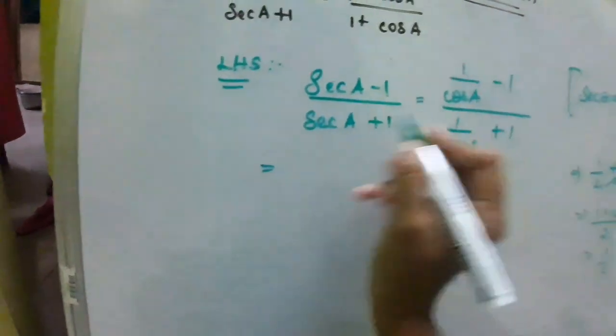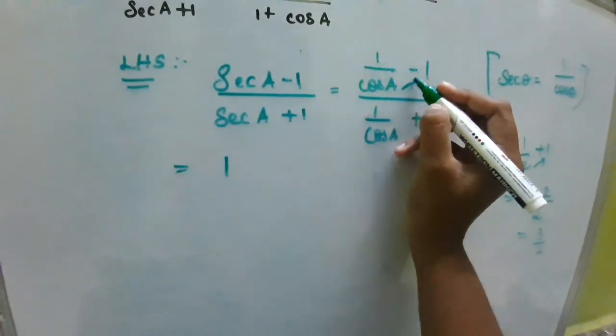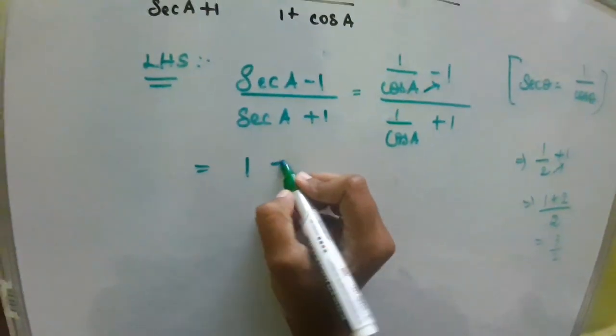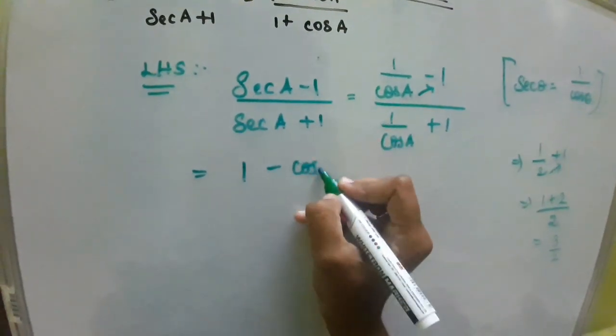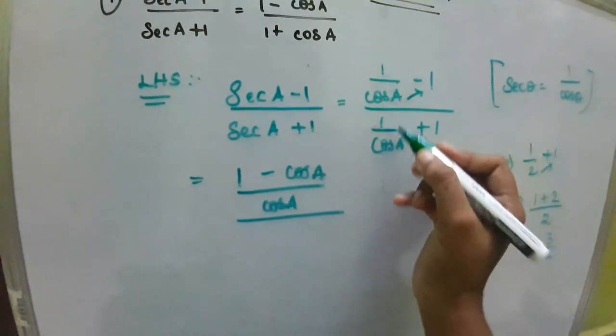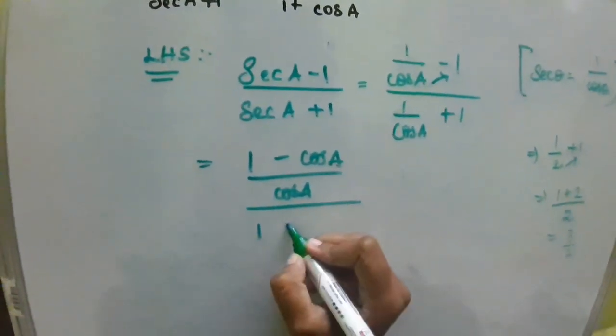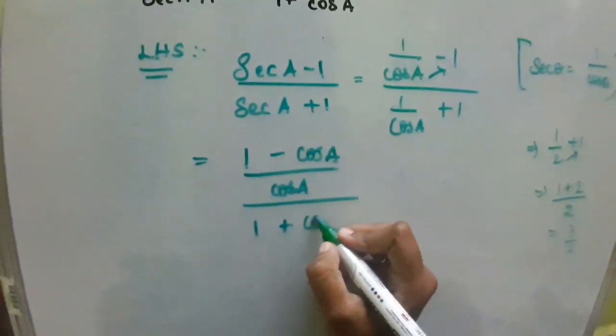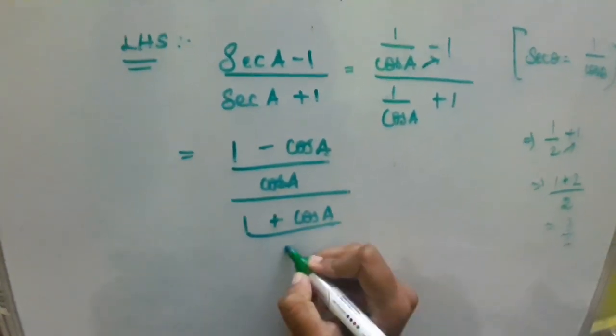We are going to do the same here. So, multiplying cos A with 1, 1 minus cos A divided by cos A, whole divided by 1 plus cos A divided by cos A.